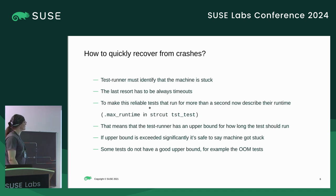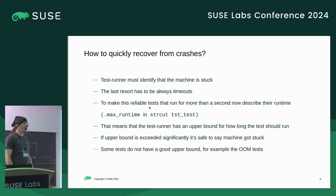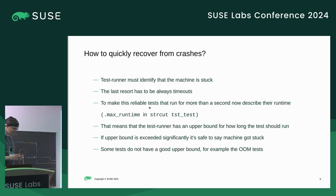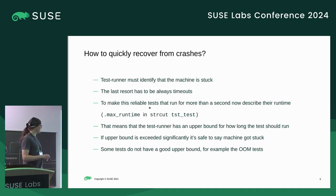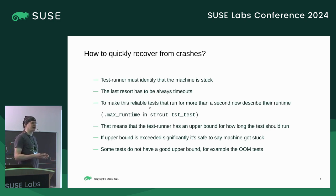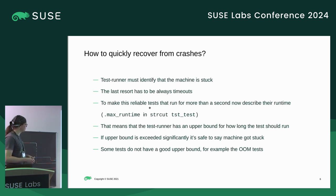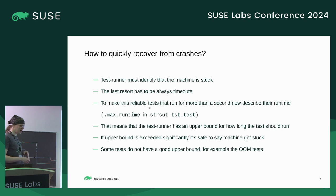The first problem we solve with this is how to quickly recover from crashes. The test runner for the kernel has to figure out if the test machine is stuck, and all kinds of things can happen. It's impossible to do this quickly if you have no idea how long the test cases are supposed to run. One of the first things we added to the metadata was max runtime for test cases. The majority of test cases run for a fraction of a second, and we annotated those that run longer with a max runtime, giving the test runner an upper bound.